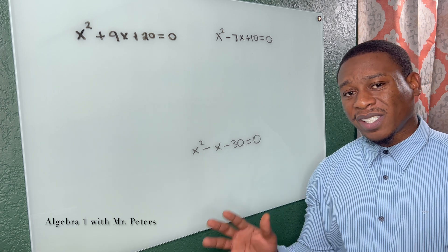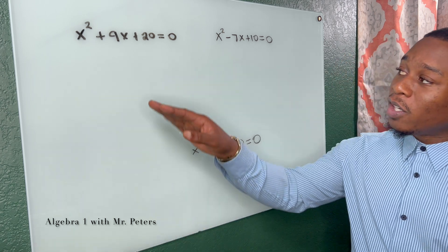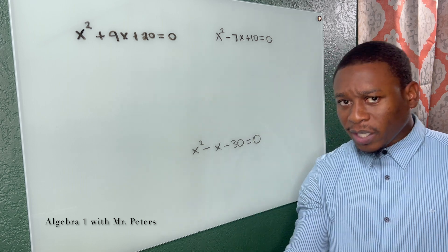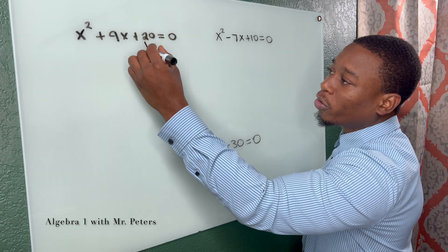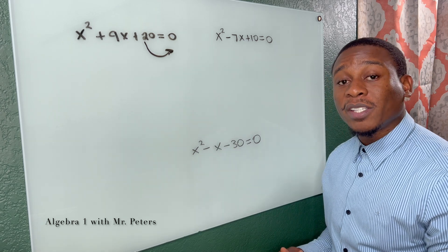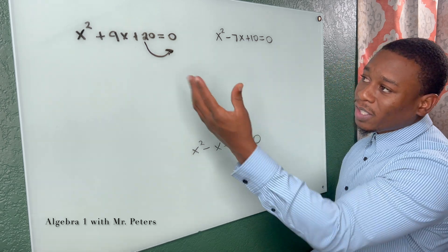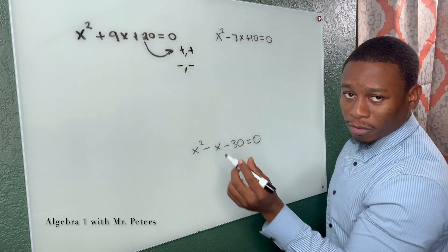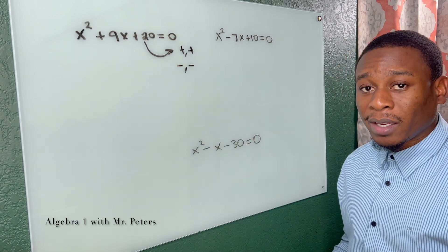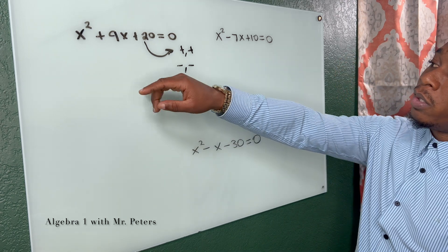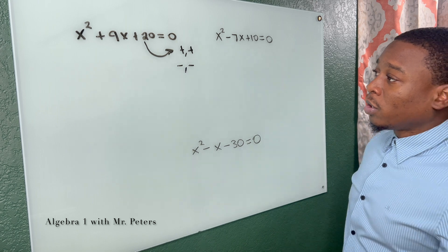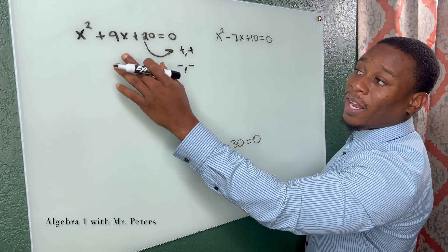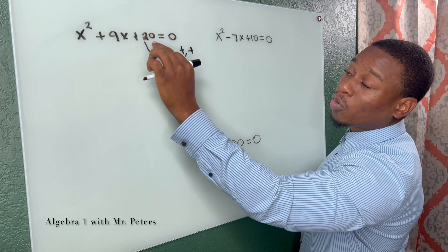First aspect we're looking at is the zero product property. That means the equation is going to be equal to zero and to properly solve we have to set our factors equal to zero. But before we get there, let's touch on the importance of C and how understanding C makes factoring easy. If C is positive, that means factor one and factor two are either both positive or both negative, meaning they both have the same sign.